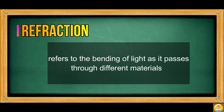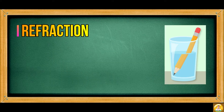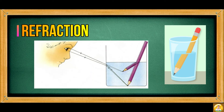Refraction refers to the bending of light as it passes through different materials. For example, a pencil in a glass of water appears bent because of the different materials that interact with light. Light moves faster in air than in water — when light travels from air to water, its speed decreases. A medium is optically dense if it slows down the speed of light. This is why the pencil looks bent.